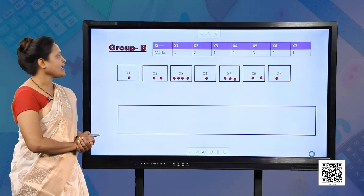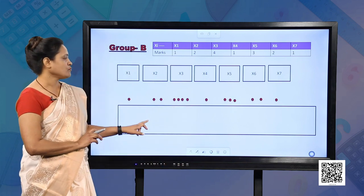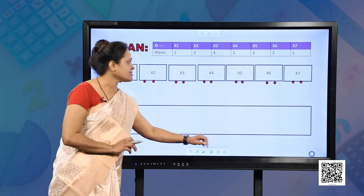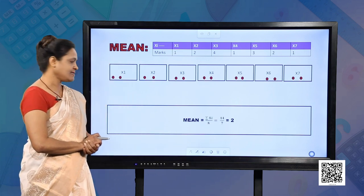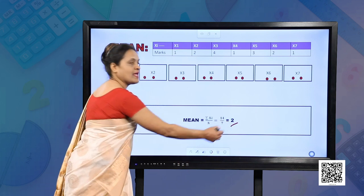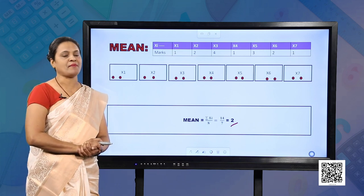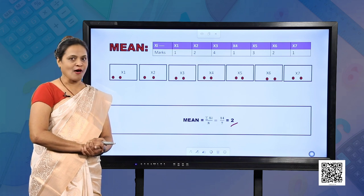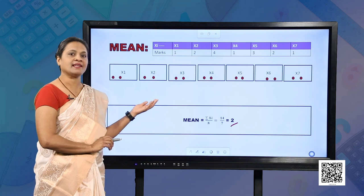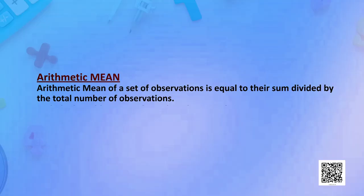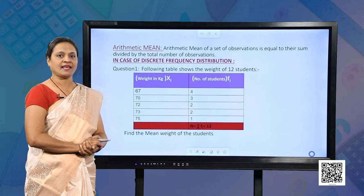Similarly, Rashmi calculated the mean of Group B. The total collection turned out to be fourteen, and these fourteen marbles divided among seven students equally gave each student two marbles, so the mean of Group B is two. Rashmi concluded that Group A is performing better than Group B and decided on some remedial measures for Group B. So you saw that calculation of mean helped Rashmi decide how to improve her teaching. Arithmetic mean is the sum of all observations divided by the number of observations — that is our definition.